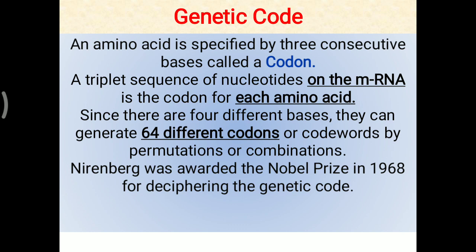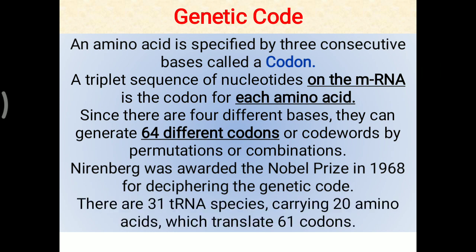Nirenberg was awarded the Nobel Prize in 1968 for deciphering the genetic code. There are 31 tRNA species carrying 20 amino acids, which translate 61 codons. So 64 different codons are possible with four nitrogenous bases on the mRNA, but only 61 actually code for the 20 amino acids — the remaining 3 we will look at in the next slide.